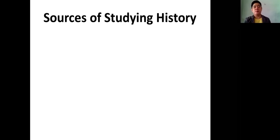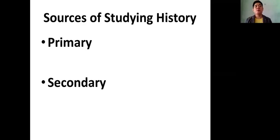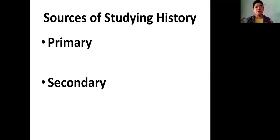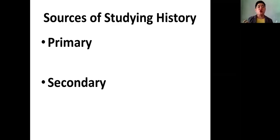What are the sources of history? There are two sources of history. We have the primary source and the secondary source. When you say primary source, it pertains to artifacts and fossils. Artifacts are the materials used by past civilizations — the books and written materials left behind. Fossils pertain to the remains of plants, animals, and humans. Secondary sources include newspapers, diary, and books. You can read your module about the sources of history for more information.